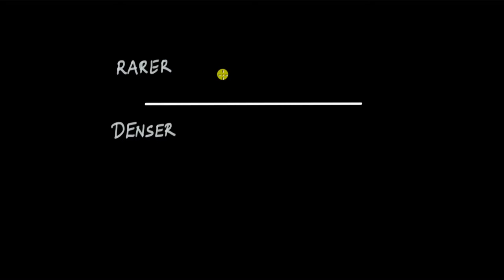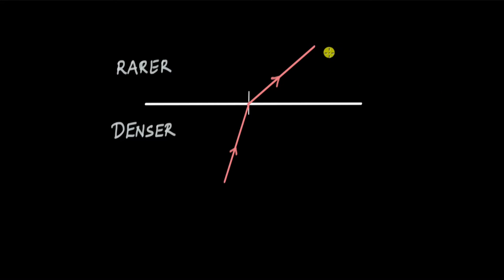Before we go into diamonds and everything, let's quickly recap what total internal reflection is. This type of reflection happens when you have light going from a denser to a rarer medium — from a medium with a higher refractive index to a medium with a lower refractive index. When light does that, it bends away from the normal. This right here is the angle of incidence; if you increase this angle, the light will bend further away from the normal.